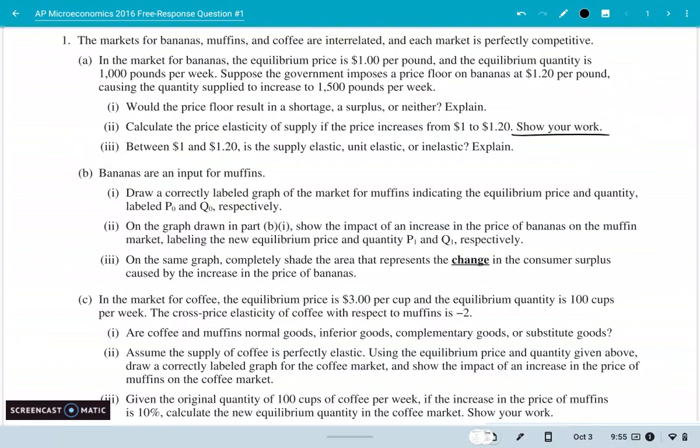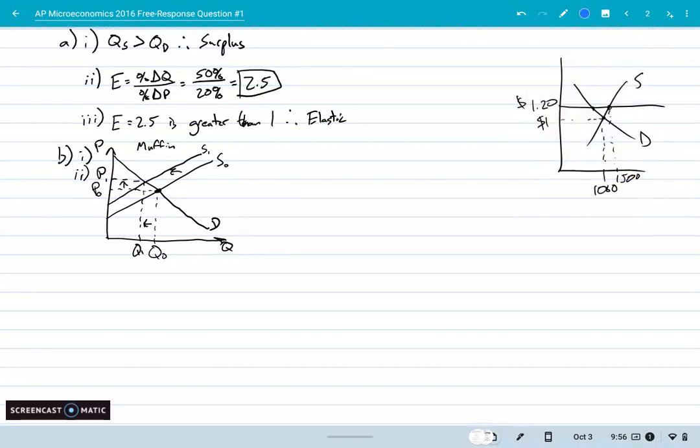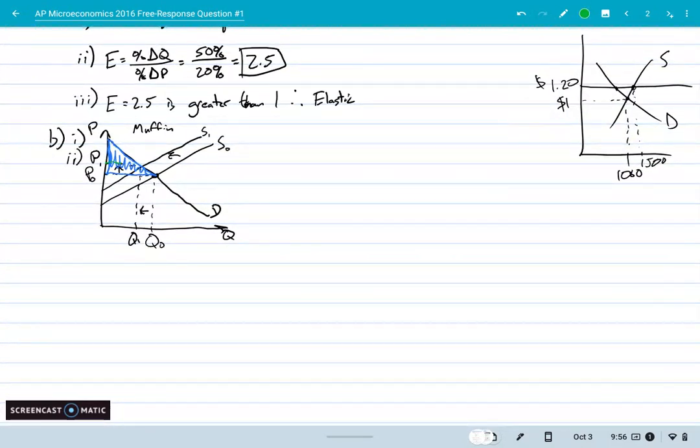Now part three on the same graph, completely shade the area that represents the change in consumer surplus. And that's the big thing there. It's the change. So I'm going to do this because I can. I'm on a computer. Before the increased price, that was the consumer surplus. Now, after the change, after that increase in price, we have a much smaller consumer surplus. There it is. Which means the change is the area in between there. So obviously, since I have to shade in the change, this was the area that I lost of consumer surplus. So I'm going to shade that in. That's what part three was asking for, the change.